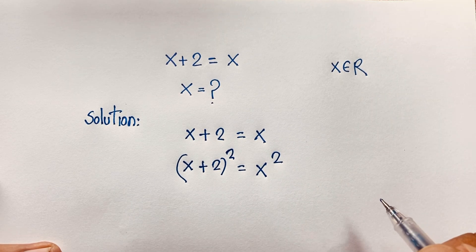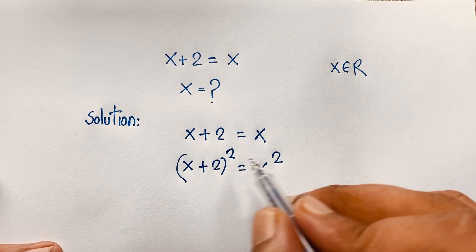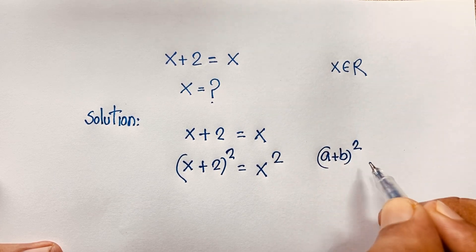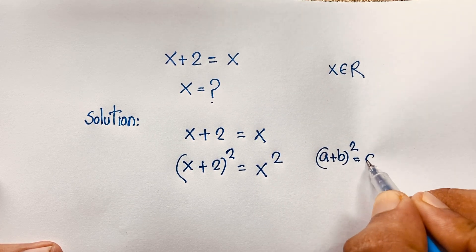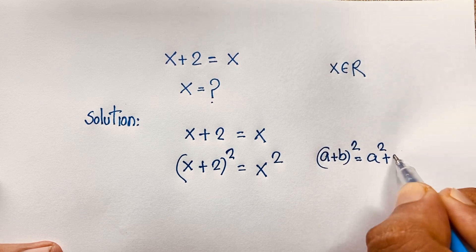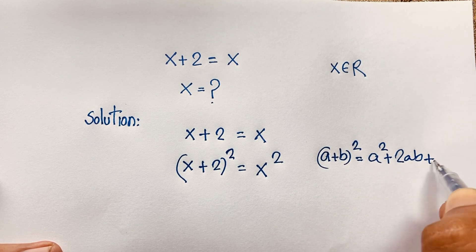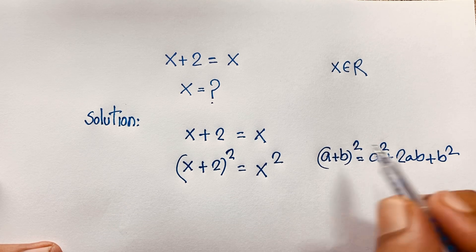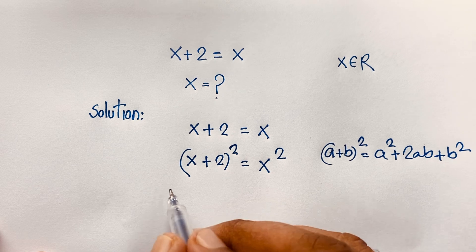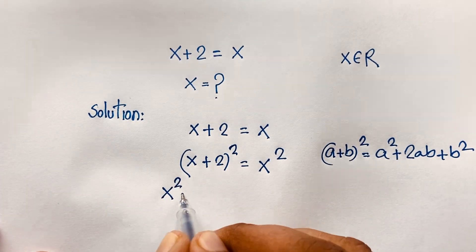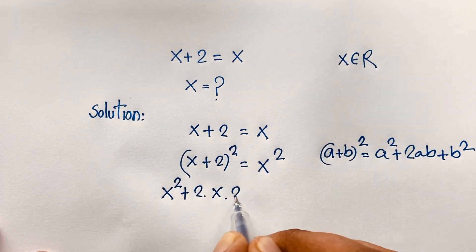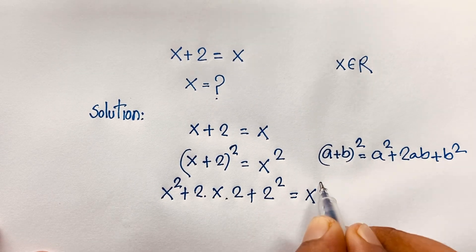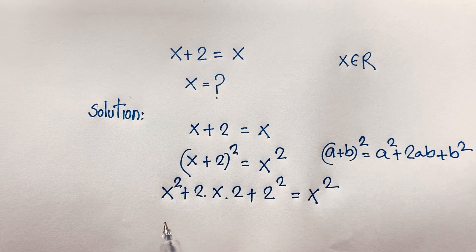I use both sides whole square. Now I apply the identity (a+b)² = a² + 2ab + b². Applying this formula here, the expression becomes x² + 2·x·2 + 2² = x², that is x² + 4x + 4 = x².